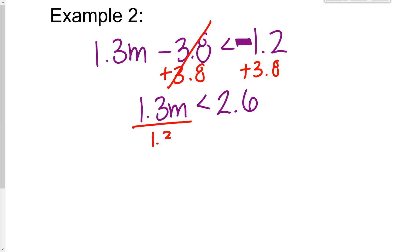Divide both sides by 1.3. So m is going to be less than 2. I don't flip it because I did not multiply by a negative.